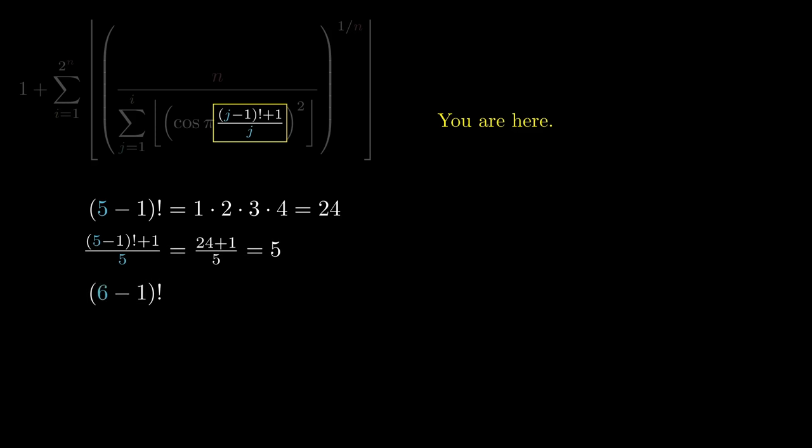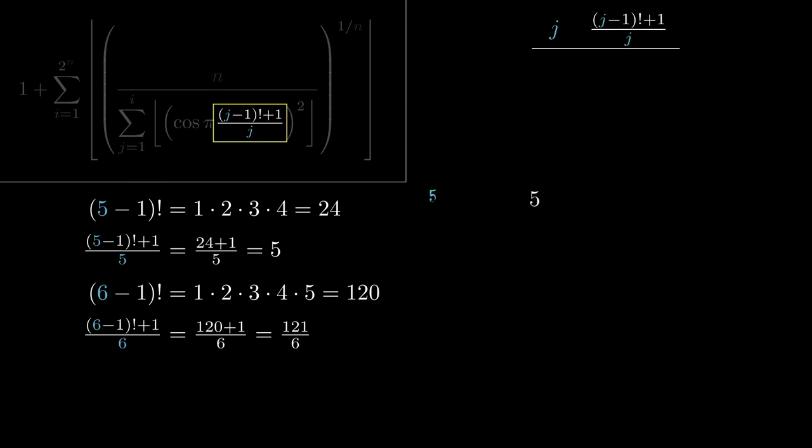What if we change j to be 6? 1 times 2 times 3 times 4 times 5 is 120. Add 1 and divide by 6, and we get 121 over 6. Here's a table with more values. Do you see a pattern?